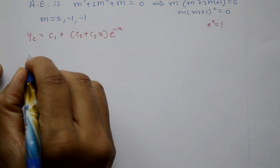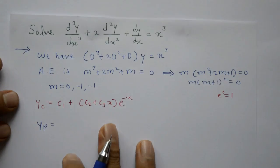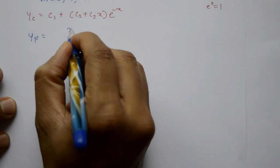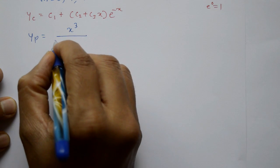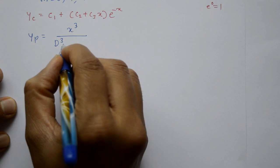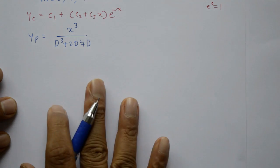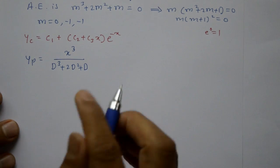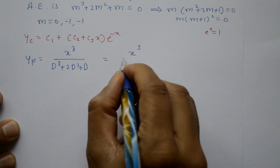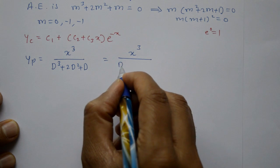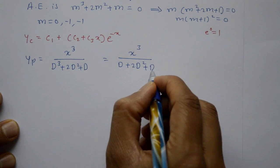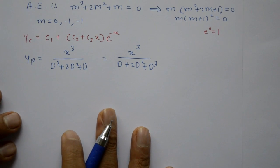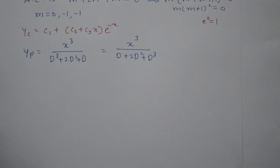Now particular integral Yp = φ(x) / f(D) = x³ / (D³ + 2D² + D). Arrange the denominator in ascending order of powers of D: D + 2D² + D³. Now take the long division method.